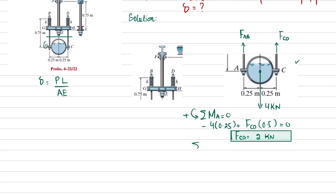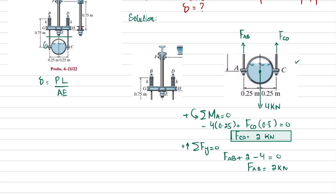Now applying the second equilibrium condition: sum of all forces along the Y direction equals zero, with upward forces taken as positive. So F_AB + F_CD − 4 = 0. Substituting F_CD = 2 kilo-newton: F_AB + 2 − 4 = 0, which gives F_AB = 2 kilo-newton.